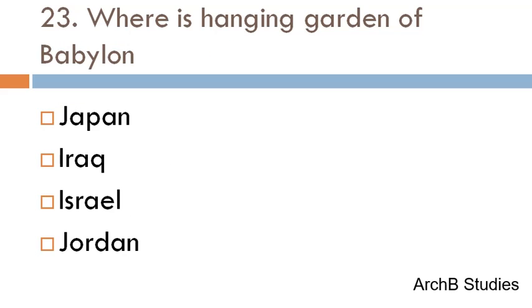Where are the Hanging Gardens of Babylon located — Japan, Iraq, Israel, or Jordan? The correct answer is Iraq.